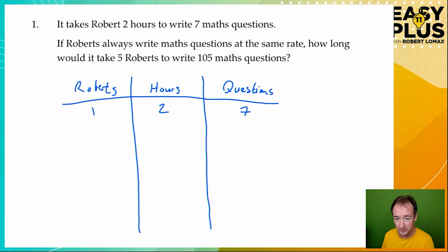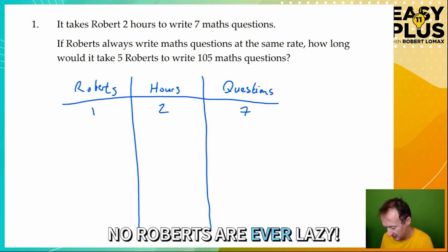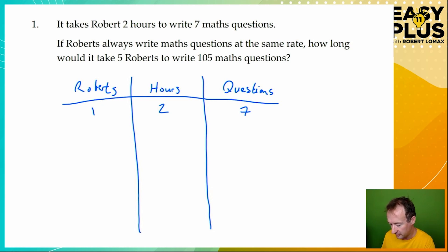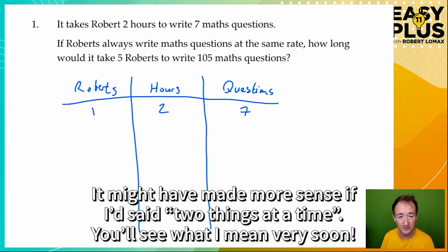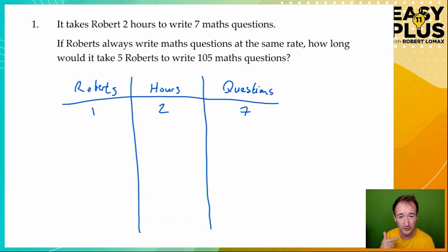So one Robert takes two hours to write seven maths questions. Now we know that Roberts always write maths questions at the same rate, so we don't need to worry about random elements such as one Robert being lazier than another. We can assume that all these Roberts are the same. How long would it take five Roberts to write 105 maths questions? Now the basic principle when you're working with a table like this is that you only change one thing at a time.